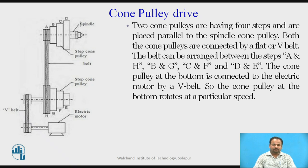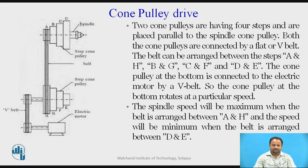The cone pulley at the bottom is connected to the electric motor by a V-belt, so it rotates at a particular speed. The spindle speed will be maximum when the belt is arranged between A and H, and minimum when arranged between D and E. When the input shaft has a lower diameter and the output shaft has a larger diameter, we get more torque and less speed, and vice versa.